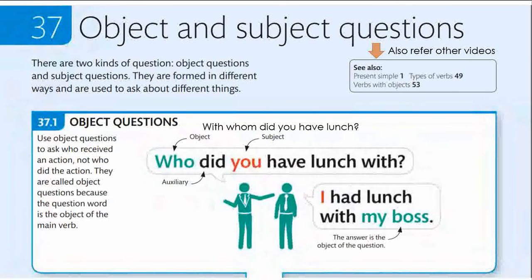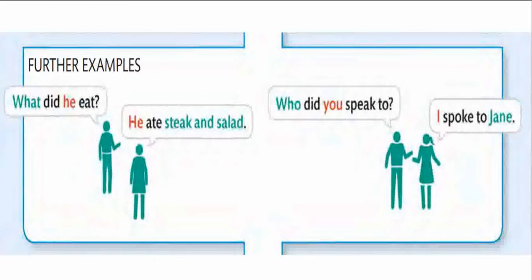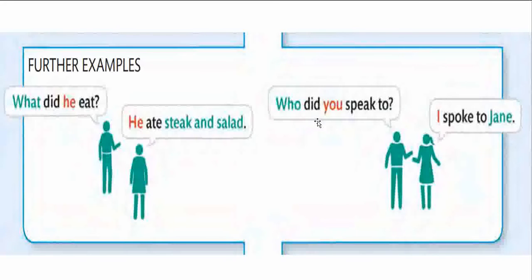Let us see certain constructions based on the object question pattern. 'What did he eat?' — my focus is 'what,' so I'm looking for the object, and I have used 'did' for constructing the object question. 'He ate steak and salad,' so the answer to what object is steak and salad. 'Who did you speak to?' — my answer is 'I spoke to Jane,' so Jane is the object for the word 'who.'